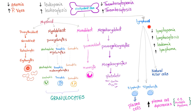Let's go to the lymphoid lineage. You have B lymphocytes, T lymphocytes, and natural killer cells. Increased lymphocytes could be lymphocytosis, leukemia, or lymphoma. Lymphocytosis could be polyclonal or monoclonal — monoclonal is the cancer. Few lymphocytes is lymphopenia. Now, B lymphocytes give rise to plasma cells. An increase in the number of plasma cells is called plasma cell dyscrasia, such as multiple myeloma.